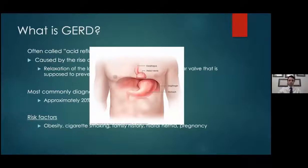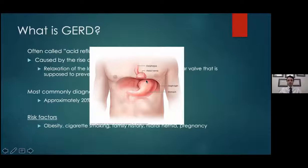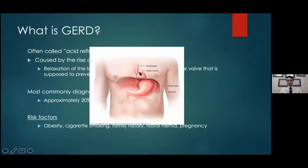I mentioned hiatal hernia, so I want to explain what that is. Here's the esophagus leading down to the stomach. You can see this is the hiatal hernia sac — essentially the top part of the stomach can be pulled up above the diaphragm, into the chest cavity. This contributes to acid reflux because that valve is now up there, and you don't have the reinforcement from the diaphragm helping the lower esophageal sphincter control the separation between the esophagus and the stomach.